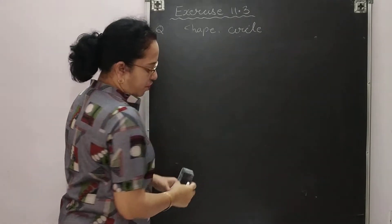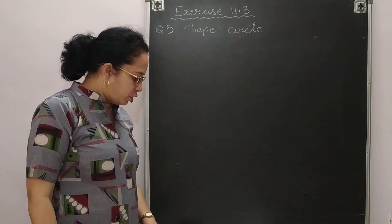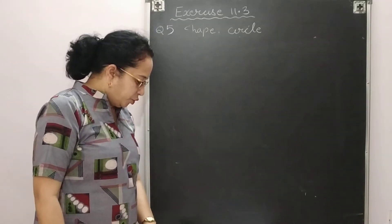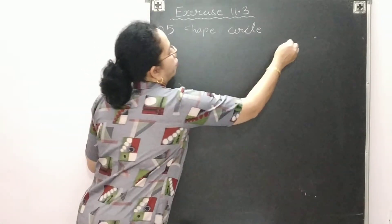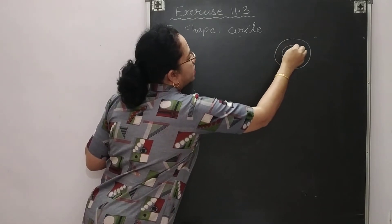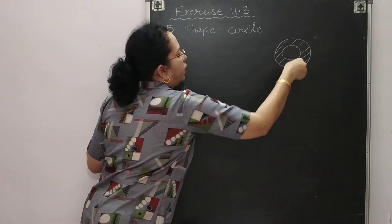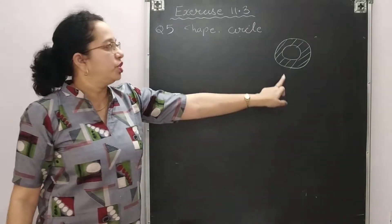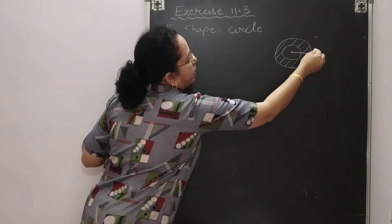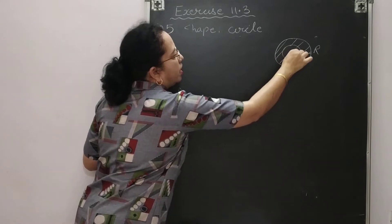Question number 5: From a circular sheet of radius 4 cm, a circle of radius 3 cm is removed. One sheet is given and one circular portion is removed; we need to find the remaining (shaded) area. Let capital R = radius of bigger circle and small r = radius of smaller circle.